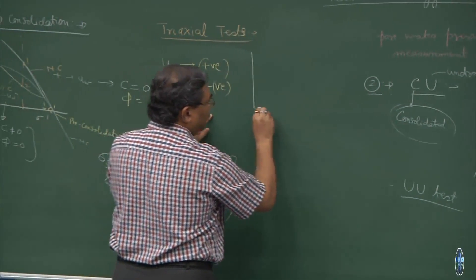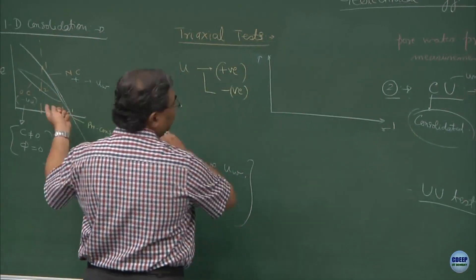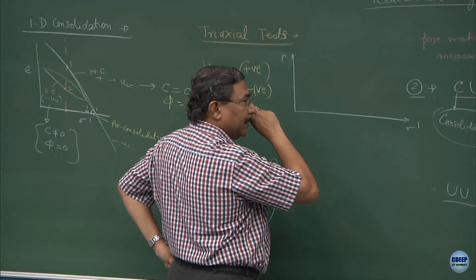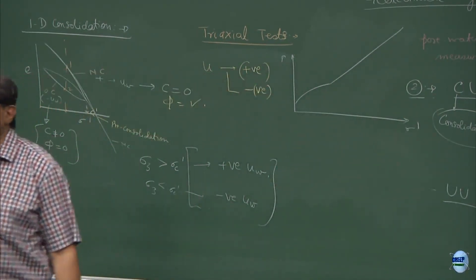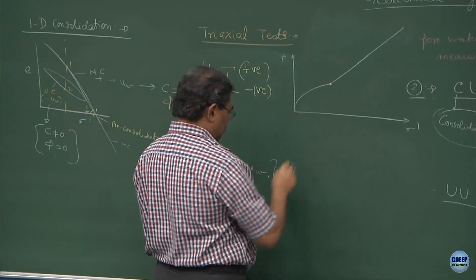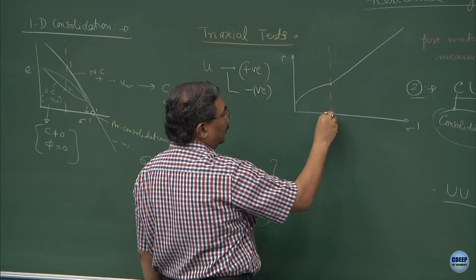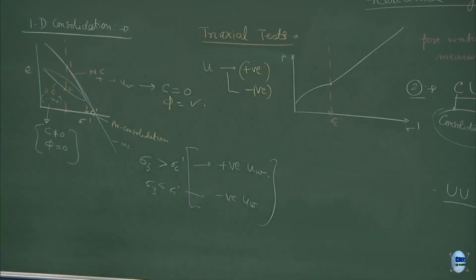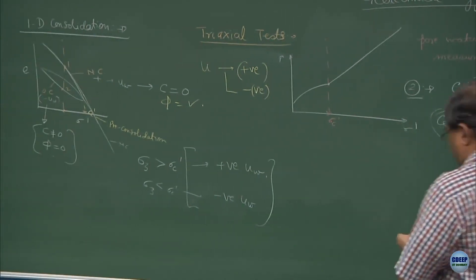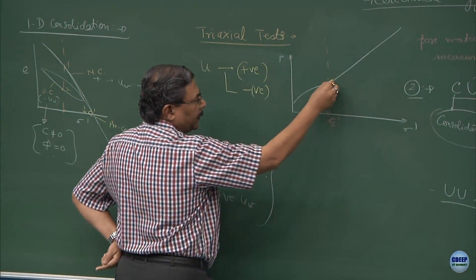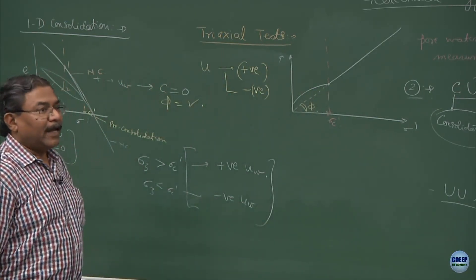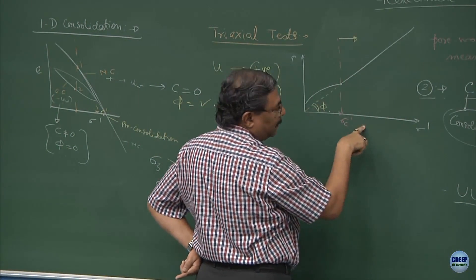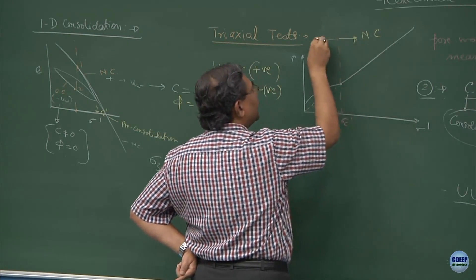If I plot now tau versus sigma prime and project this information on a tau sigma prime plane, I am going to get something of this type. This point of discontinuity is going to be sigma c prime. If I extend this portion, this is your friction angle. Anything beyond sigma c prime in terms of sigma stresses is going to be NC response and less than this is OC response.